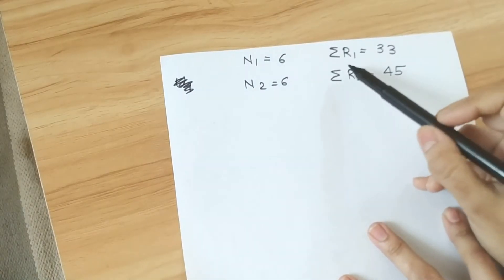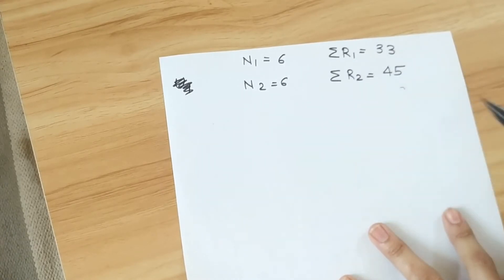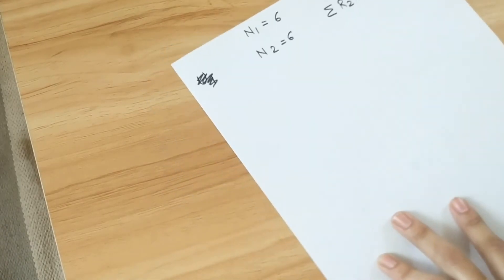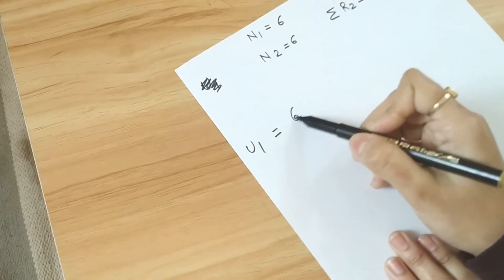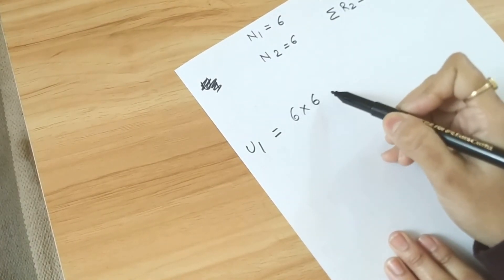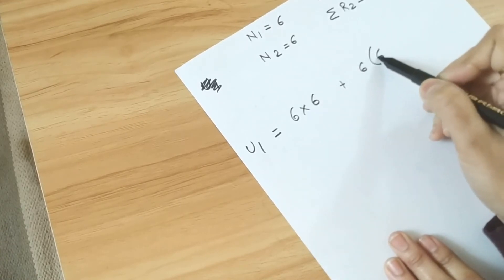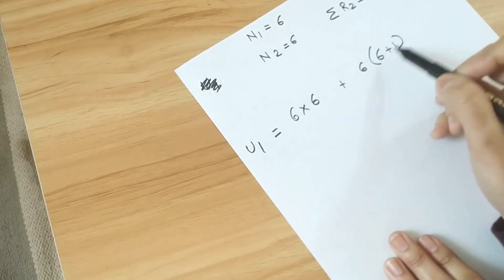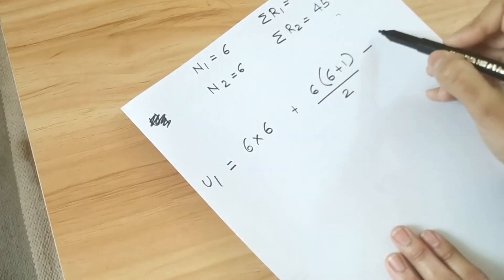We see that N1, N2 is 6, 6, sigma R1 is 33, sigma R2 is 45. Now we use the formula. U1 is N1 into N2 that is 6 and 6 plus N1 into N1 again plus 1 upon 2 minus the sigma R1. So that is 33.